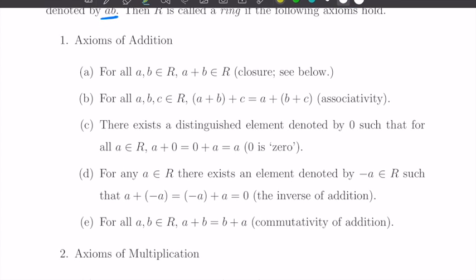First, axioms of addition. If A and B are elements of this set R, then the result of the addition — the sum A plus B — is also an element of this set R. So adding doesn't go out; the result of addition doesn't go out of this set. This property is called closure. So this operation is closed under addition.